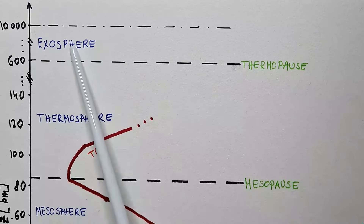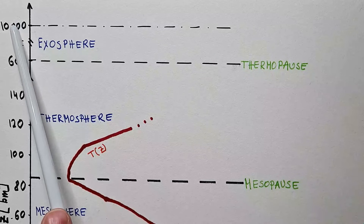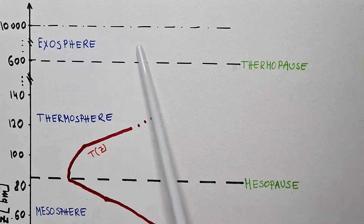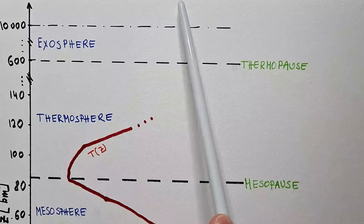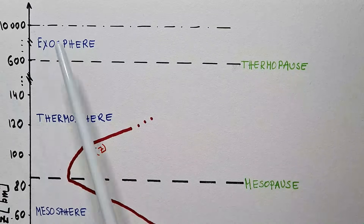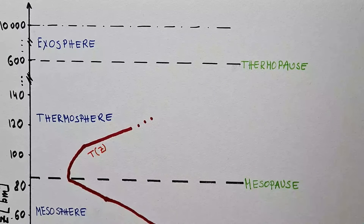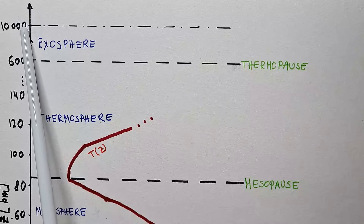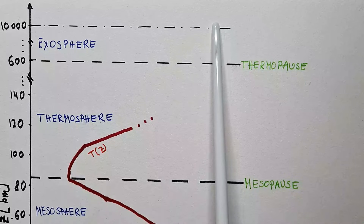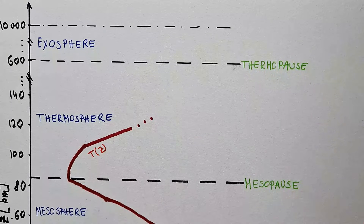The last layer in the atmosphere is the exosphere, approximately between 600 and 10,000 kilometers above the surface. Here, atoms and molecules can escape into interplanetary space. Most satellites orbit in the exosphere at a height of around 2,000 kilometers. Very little is known about the exosphere, as well as the thermosphere and mesosphere. The exosphere is mostly just hydrogen and helium. Note that 10,000 kilometers is not a fixed boundary, as indicated by the dash-dot line on the figure.